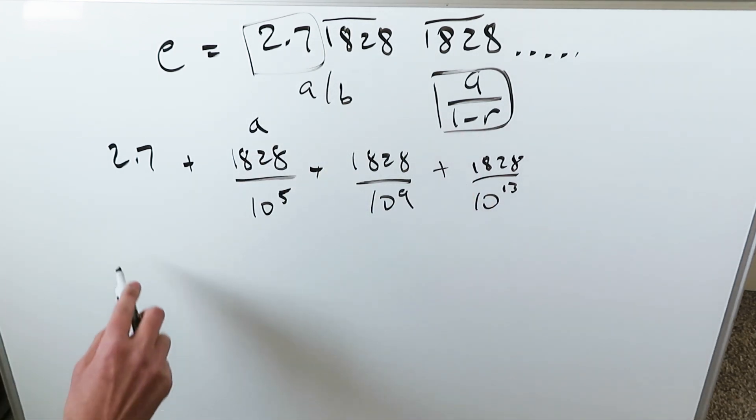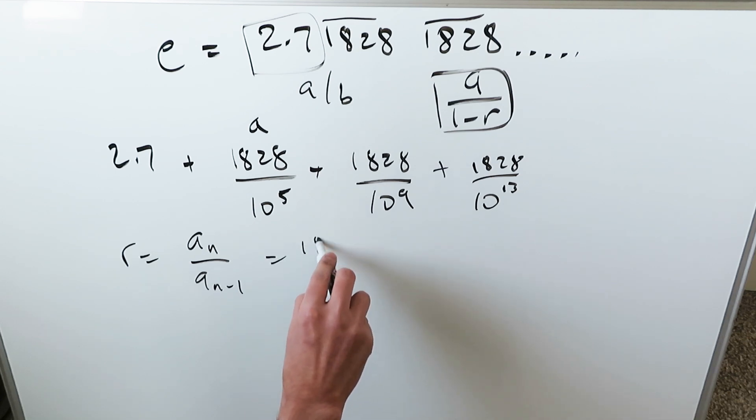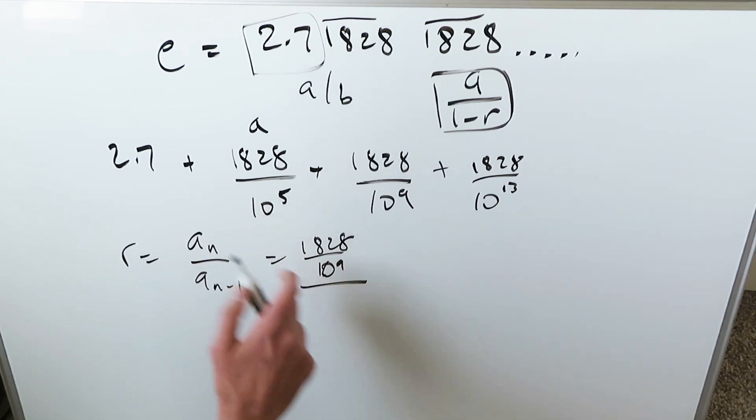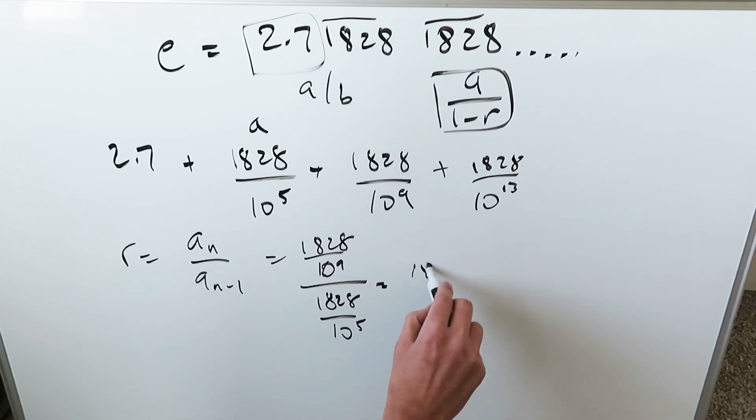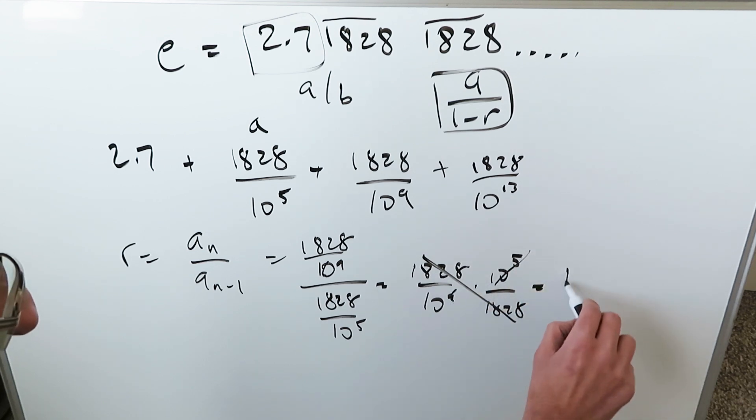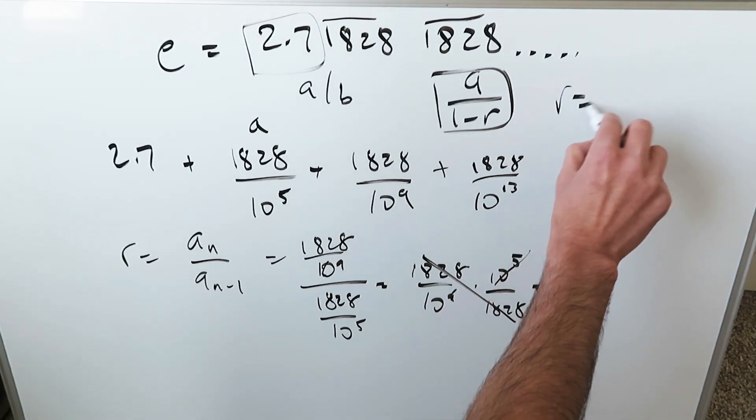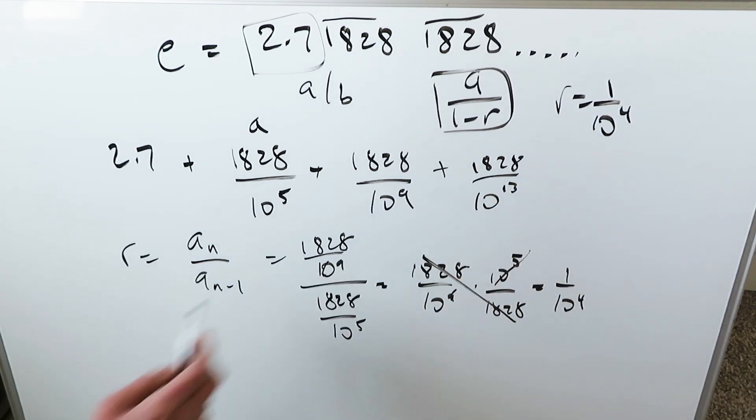the end, how would we determine our common ratio? Your common ratio would be any term divided by the term right before. If I pick this term, I would do 1828 divided by 10 to the power of 9, divided by the term right before, 1828 over 10 to the power of 5. And you can flip things around: 1828 divided by 10 to the power of 9, times 10 to the power of 5 divided by 1828. I'd have a common ratio here which would be 1 divided by 10 to the